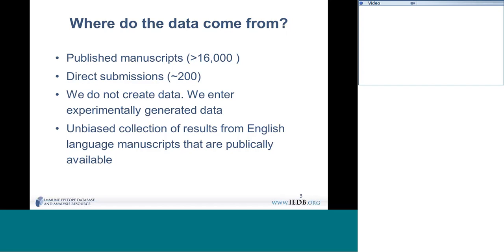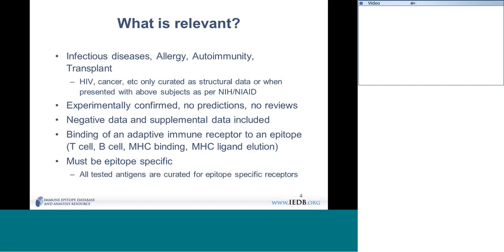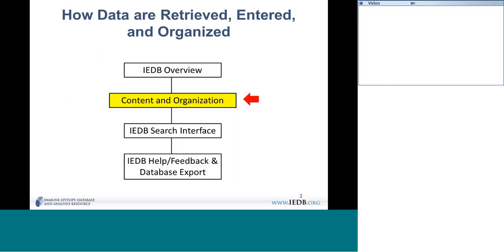We want to know if anyone encounters something they think should be included, because we want to have all the relevant data. The database covers infectious disease, allergy, transplant, and epitopes. HIV and cancer are specifically excluded by our contract, but if HIV or cancer epitopes have 3D structural data we do include them, and also if those epitopes appear in a manuscript about one of the other covered categories, we will also capture it.